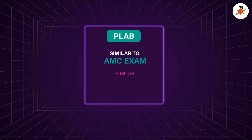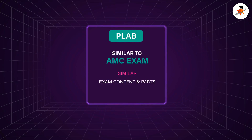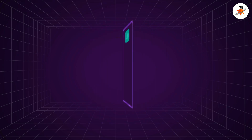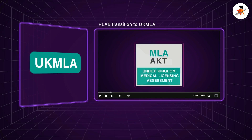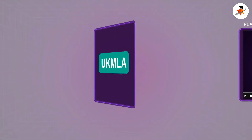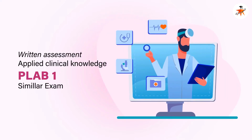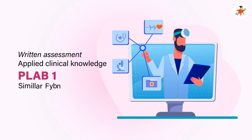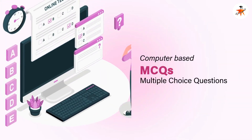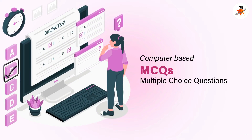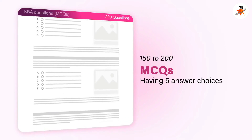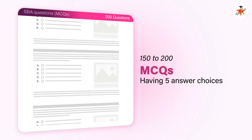PLAB is also quite similar to AMC as far as exam content and parts are concerned. Despite the PLAB transition to UK MLA, PLAB 1 will be replaced by MLA AKT, which is a Medical Licensing Assessment Applied Knowledge Test. This is a written assessment of applied clinical knowledge, quite similar to the PLAB 1 exam. It is a computer-based multiple choice question exam composed of Single Best Answer, SBA questions, and will be the same for UK graduates and IMGs. The total number of questions ranges from 150 to 200, each having 5 answer choices labelled A to E.